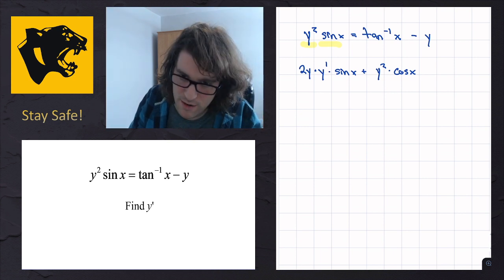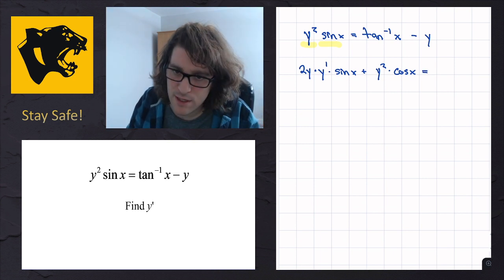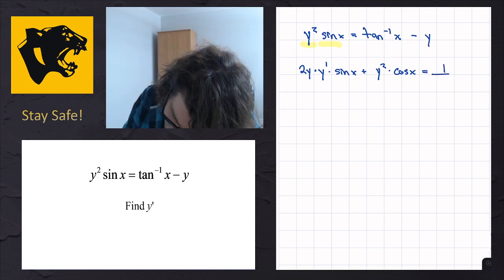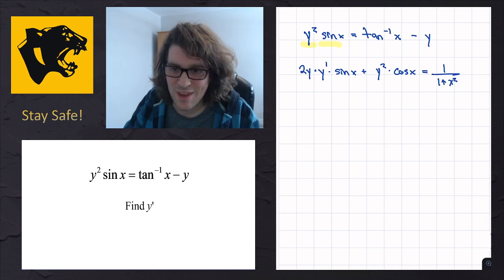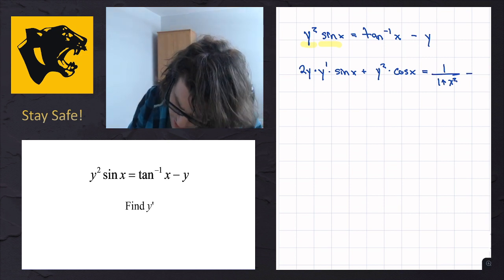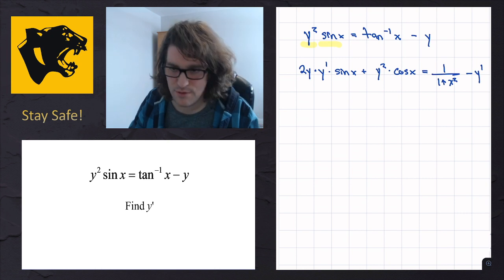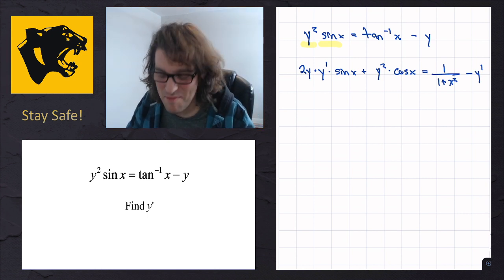The right hand side: the derivative of inverse tan of x is 1 over 1 plus x squared. Then minus the derivative of y, which is just y′.